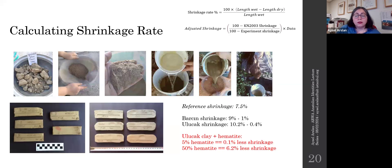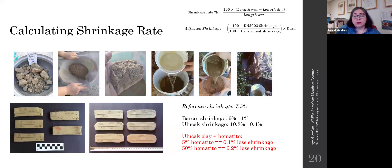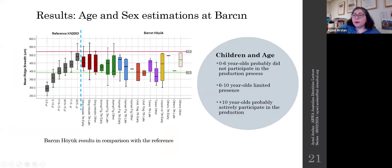Shrinkage is also affected by the types of inclusions in the clay. Most objects in my data set did not seem to have any additional temper apart from natural grit or sand already present, except for a group of clay lumps from the pottery workshop at Ulucak from the sixth millennium layers. These clay lumps were rich in hematite inclusions, so I also measured how hematite affects shrinkage. Fingerprints on clay lumps with more hematite inclusion would appear larger than those without any inclusions.